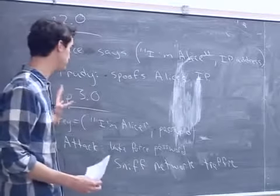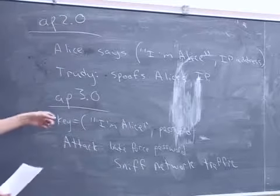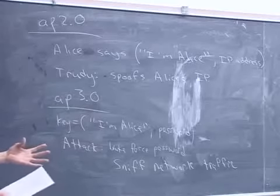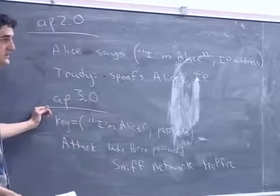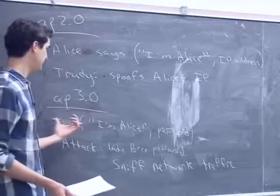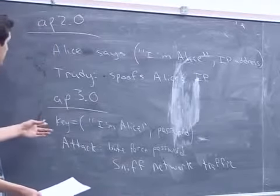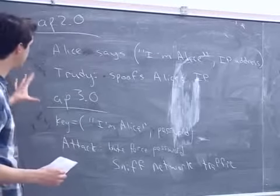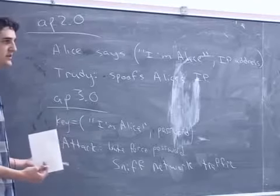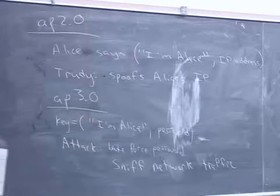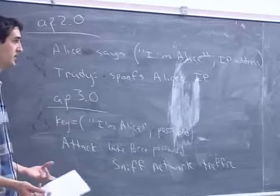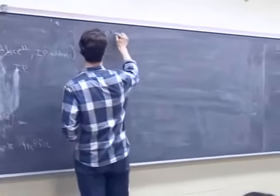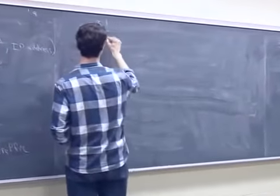Many early internet protocols were designed without password encryption. Telnet — the precursor to SSH — sent passwords in plain text. Mail protocols also sent passwords in plain text until recently. The assumption was that people wouldn't sniff network traffic, but it's so easy to do that people do it. So let's modify this: AP 3.1 sends 'I'm Alice' with an encrypted password.